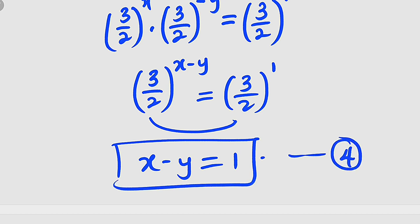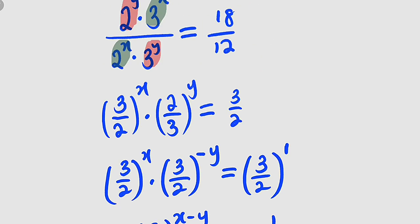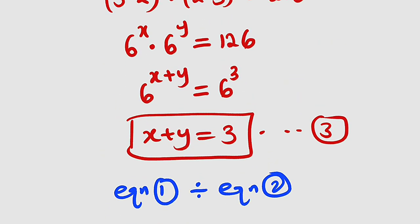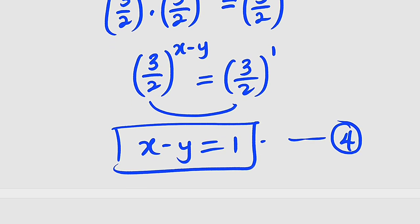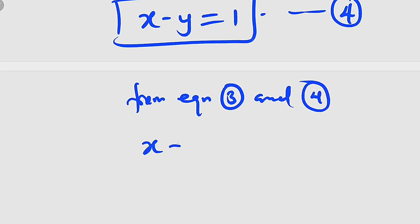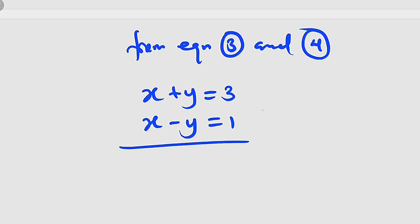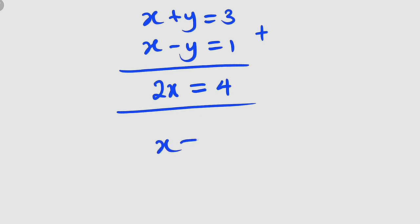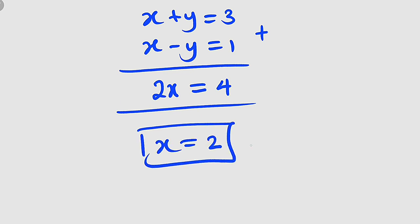Now let us combine equation number 3 and equation number 4 and solve them simultaneously. Equation 3 is x plus y equal to 3, and equation 4 is x minus y equal to 1. Adding the two equations: on the left-hand side we have x plus x making 2x, and y plus negative y is 0. On the right-hand side, 3 plus 1 equals 4. Dividing both sides by 2, we get x equal to 2.